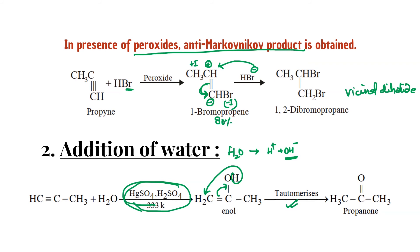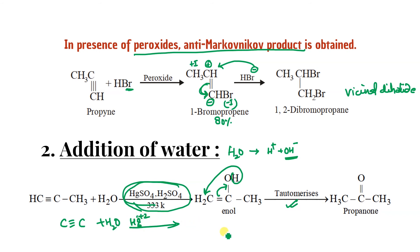For acetylene (only two carbons), the same hydration reaction with HgSO₄ and H₂SO₄ directly gives acetaldehyde instead of a ketone. This method can also be used in conversions.